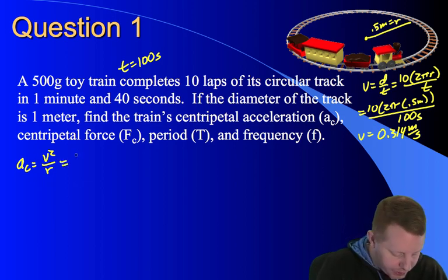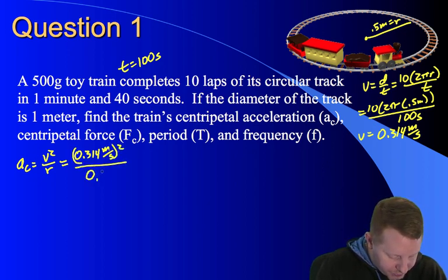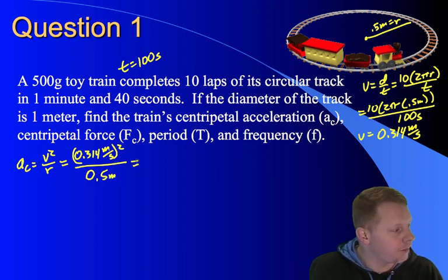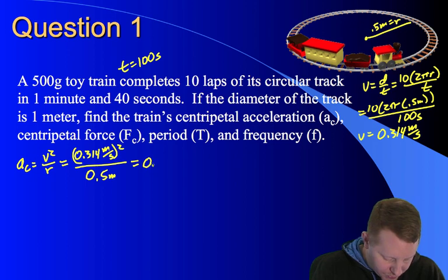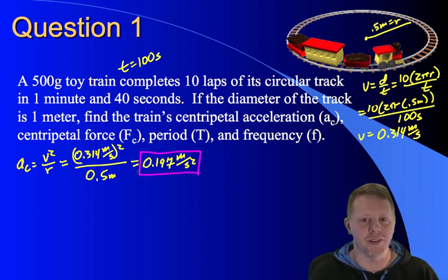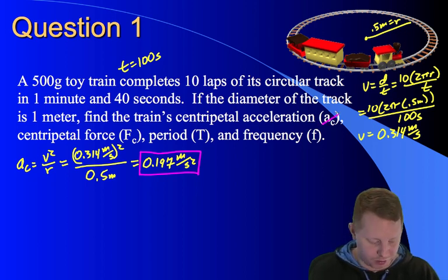Now I can use that over here in my centripetal acceleration equation. So we have our speed squared, 0.314 meters per second squared divided by our radius, 0.5 meter. And what I come up with then is 0.197 meters per second squared. That must be our centripetal acceleration. We've got that part done.